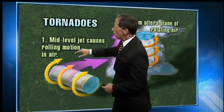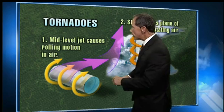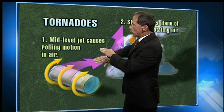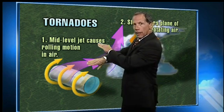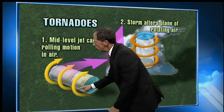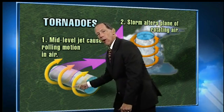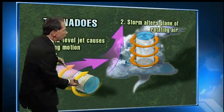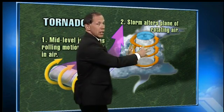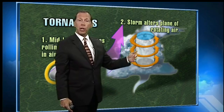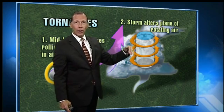The mid-level jet stream causes a rolling motion in the air. Basically what you have is wind shear — winds going in opposite directions or at different speeds at different elevations. You get this cylinder of air rotating, and with thunderstorms, everything is being drawn up. So to get that rotating column of air to then turn vertical, the thunderstorm starts to rotate — much like when you see water going down a sink.